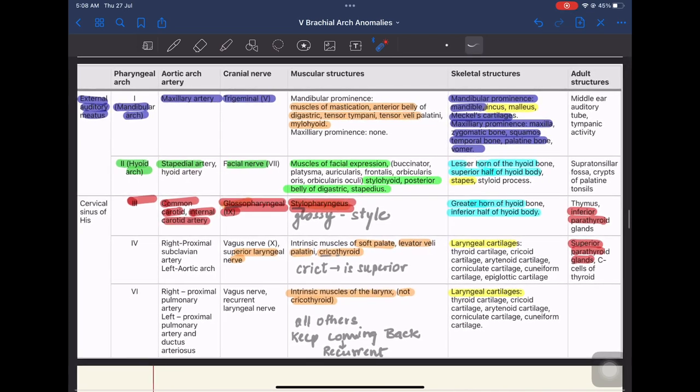Now let's come to this table which is showing the pharyngeal arch, the artery, nerve, the muscle, the skeletal element and the adult structures derived from respective branchial arches.